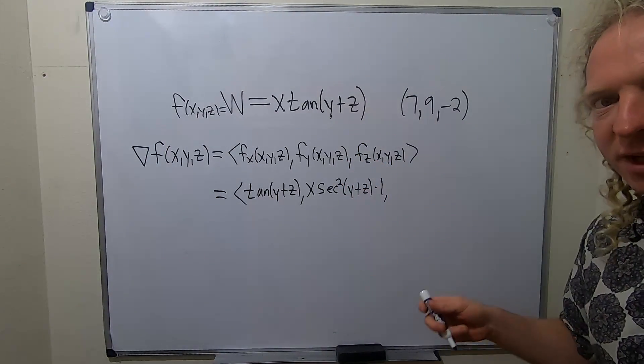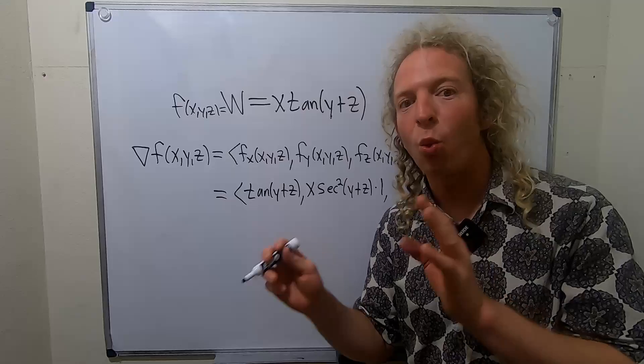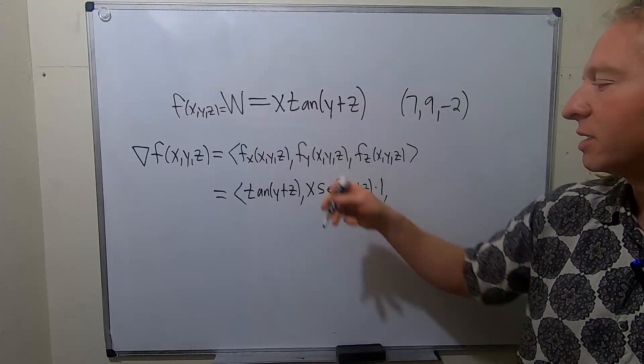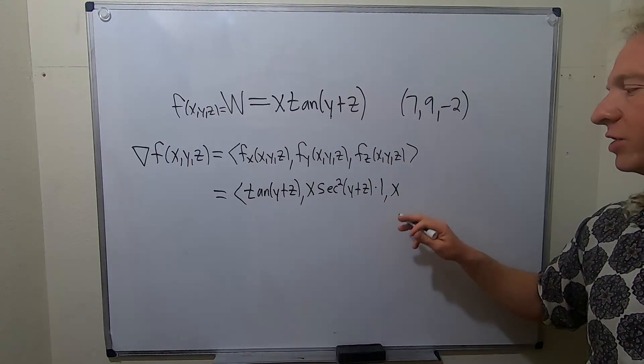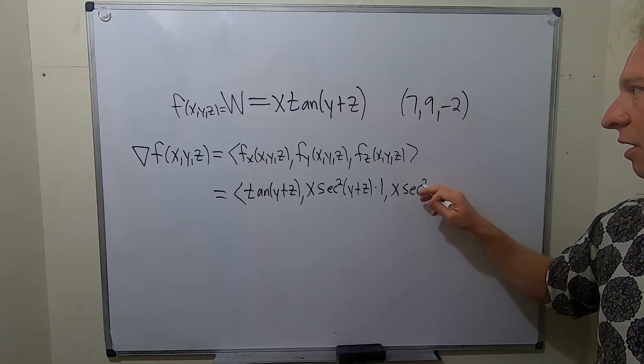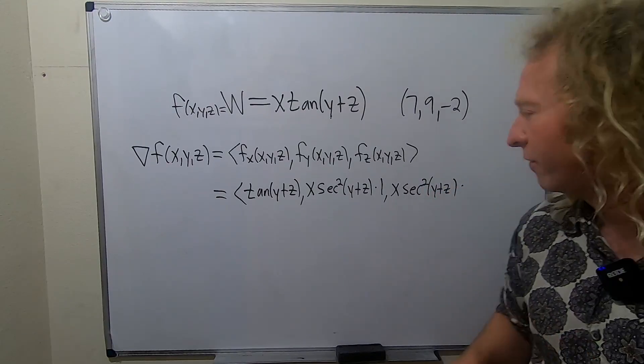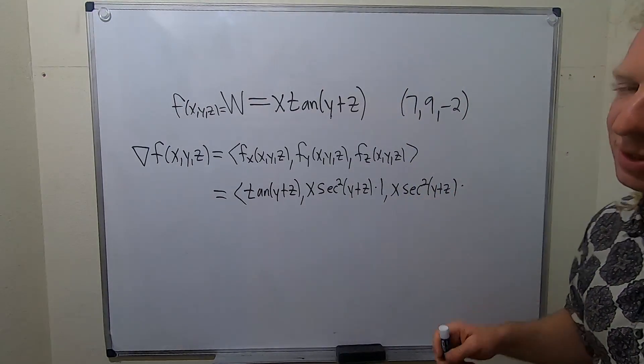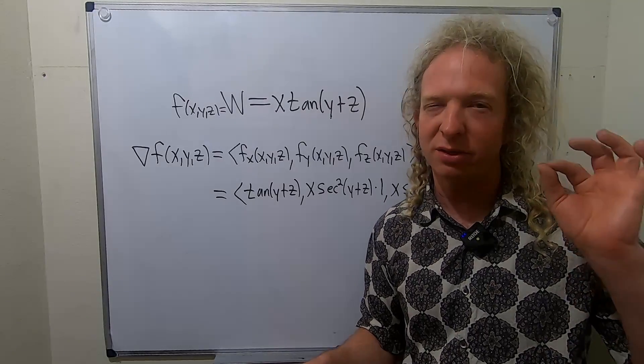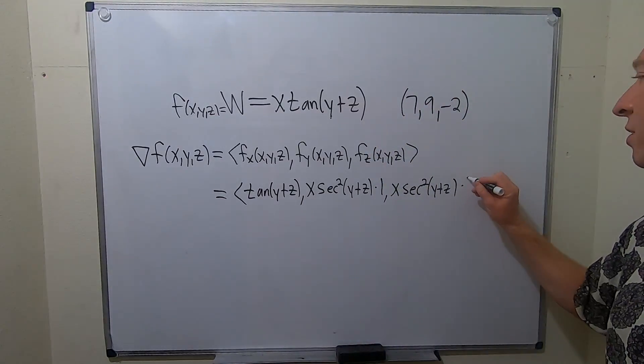fz, same thing. We're taking the partial with respect to z, so x and y are constant. So this hangs out. The derivative of tangent is secant squared, then we have y plus z times the derivative of the inside with respect to z. So the derivative of y is 0, the derivative of z is 1, so we get 1.